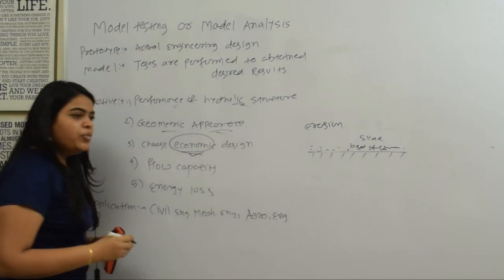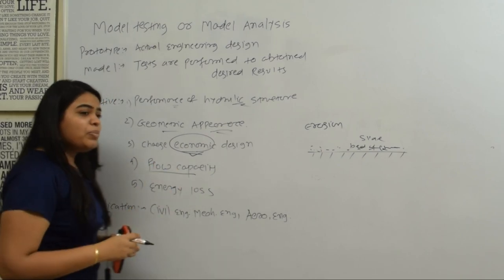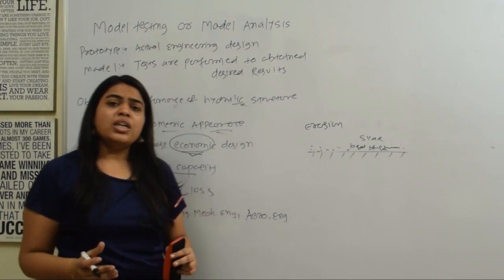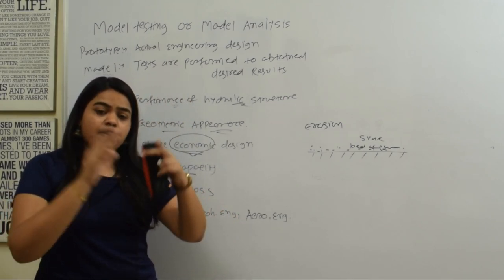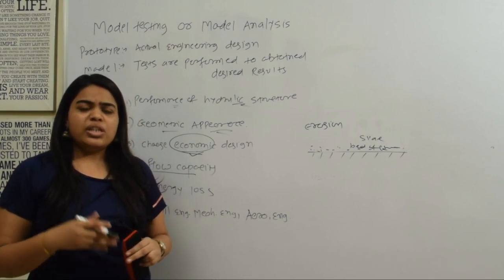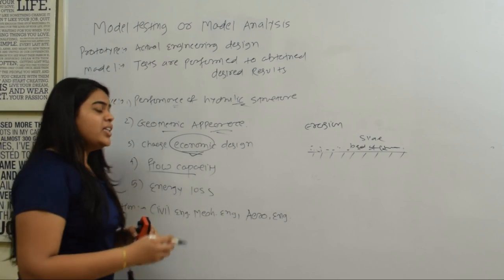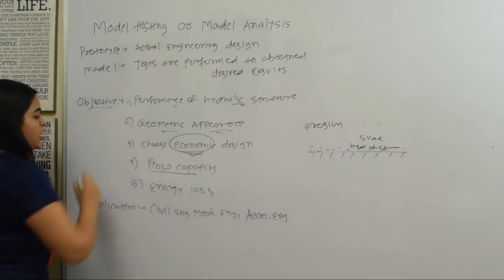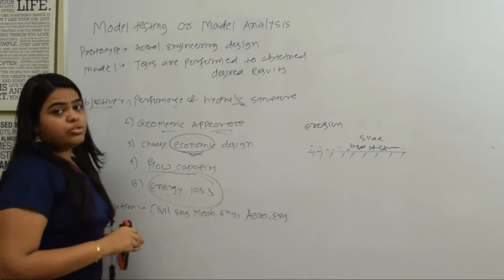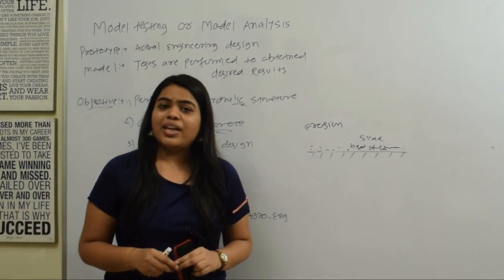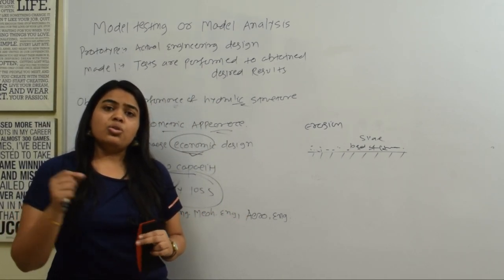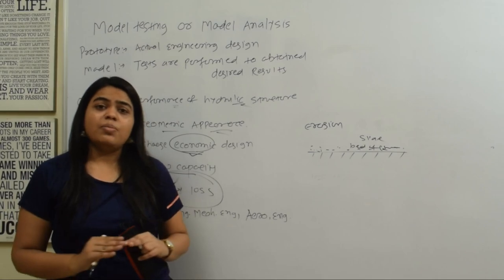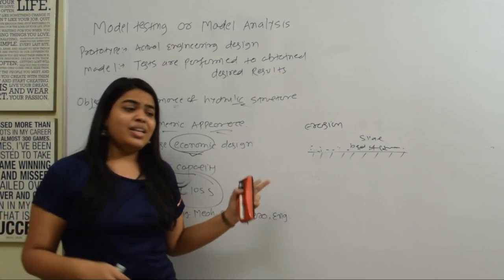Then we need to find the capacity of the flow. If we are designing a power plant, turbine, or anything, we need to find the water flow. If we are finding the pipe network, or there is a chemical industry — in any industry we need to find everything. So we are building the model. The important objective is the energy loss. In all fluid mechanics there is a lot of energy loss. What is the energy loss? If we can convert it to some other form of energy, we can use it as well. These are all the objectives.